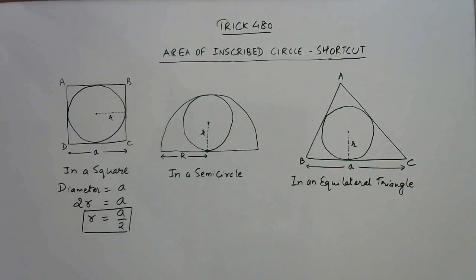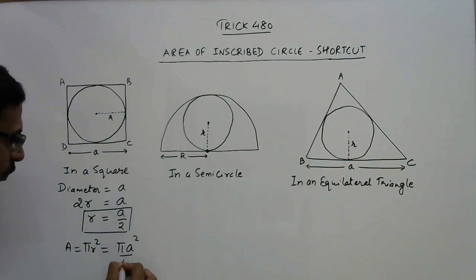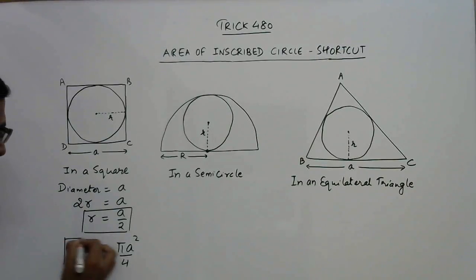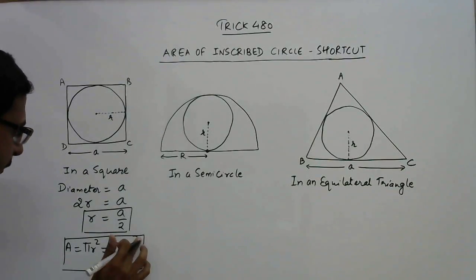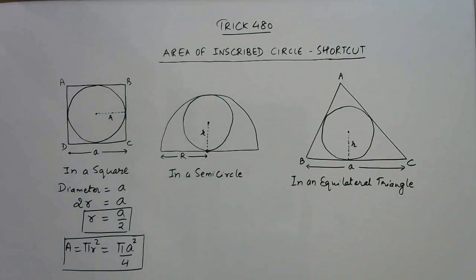So the first formula: when a circle is inscribed in a square, the radius is half of its side. Now we can very easily calculate the area of the circle. Area is πr², so π into square of this, so a² upon 4. This is the formula for finding the area of the inscribed circle.